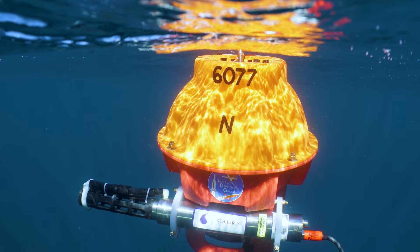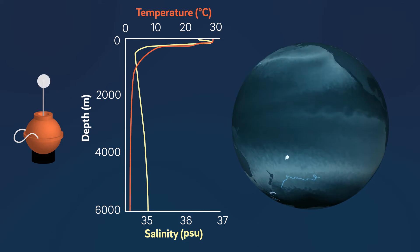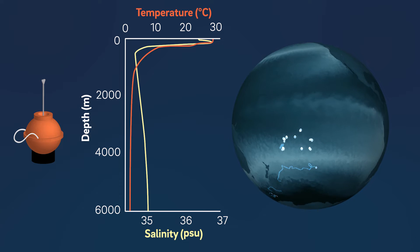New deep Argo floats, that can reach depths up to 6,000 meters, are now starting to track changes all the way down to the ocean floor.